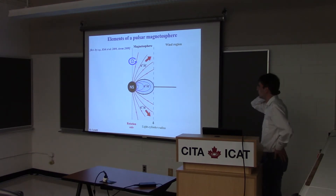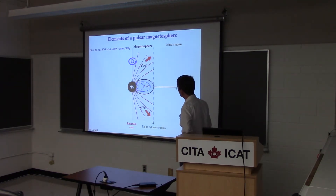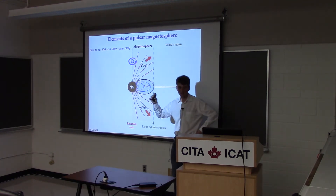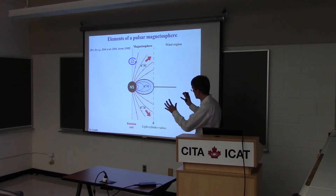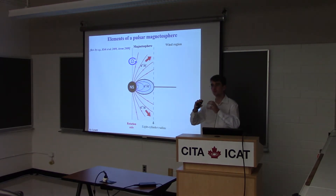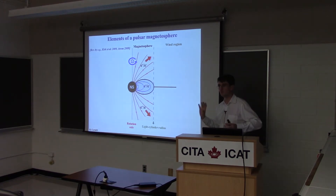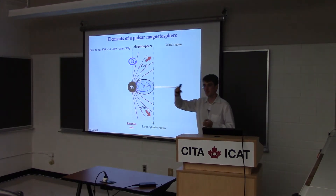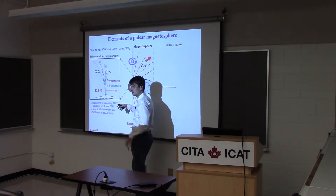I'm going to review roughly how we understand pulsars — the structure of the magnetosphere and where people think particle acceleration and high-energy emission occurs. Consider a neutron star: we know these are highly magnetized objects with a 10^12 gauss magnetic field structure, like a dipole frozen onto the surface. In vacuum, as you spin the star you induce an electric field due to the fast rotation of the field lines. This electric field will pull out charges and accelerate particles from the surface of the star — electrons accelerated by this strong induced electric field.